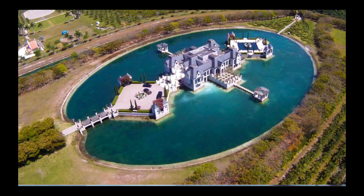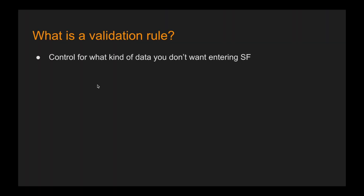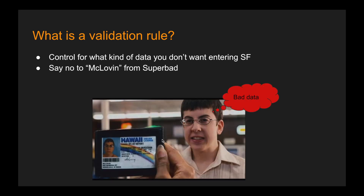A quick way to explain what a validation rule is: imagine this is your house and this is where you store all your data, all your wealth — this is your Salesforce org. The moat around it controls who comes in and who doesn't; it protects you. In Salesforce, that protection is the validation rule. Basically, a validation rule controls what kind of data you want entering Salesforce, so it is a mechanism for data control and data quality. The lady in Superbad checking McLovin's ID was like a validation rule — but in that case the validation was not good and McLovin was able to buy the beer.